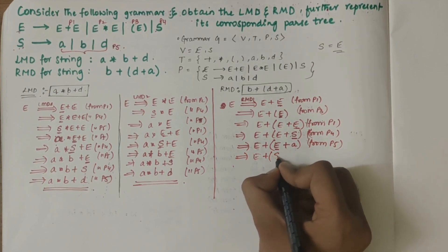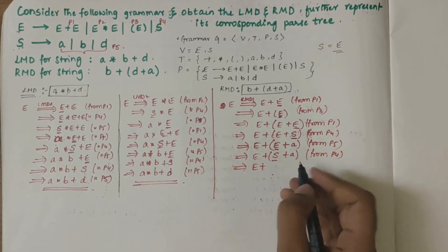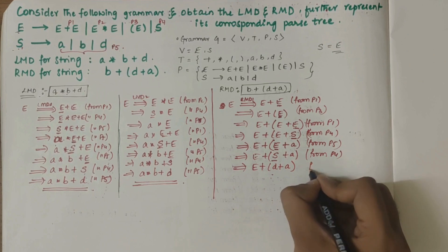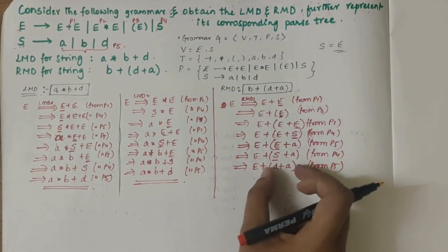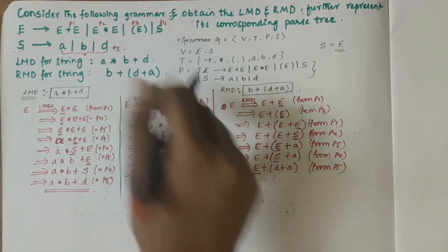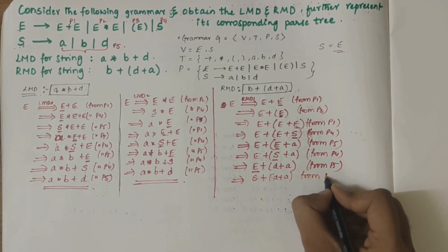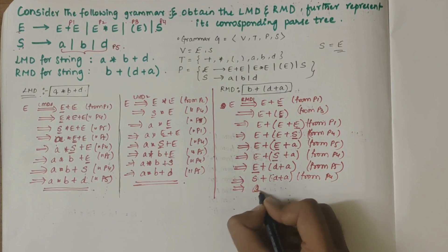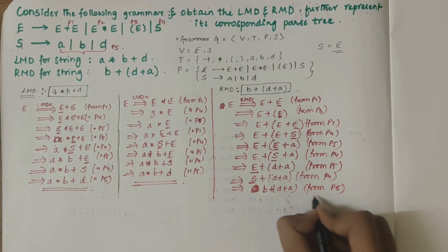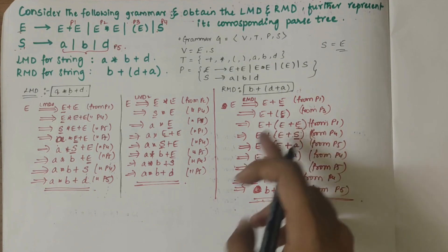S derives A from P5, giving E plus E plus A inside parentheses. Then the next rightmost E derives S and S derives D from P5, giving E plus D plus A inside parentheses. Now the remaining E derives S from P4, and S derives B from P5, giving B plus open parenthesis D plus A close parenthesis. We have obtained RMD1. There is no possibility of another RMD, so we stop here.